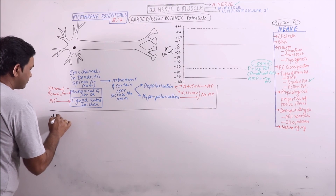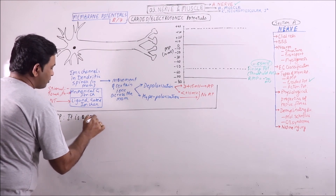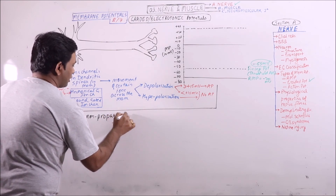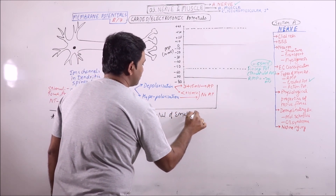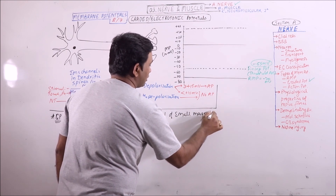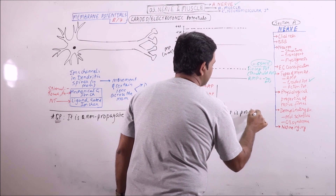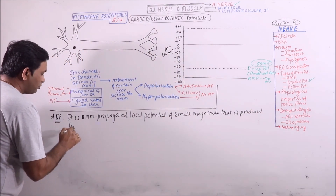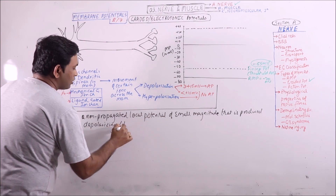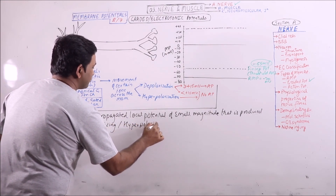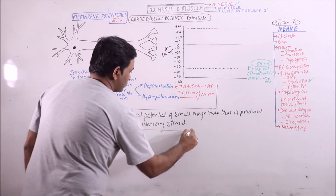How will we define the graded potential? It is a non-propagated local potential of small magnitude that is produced by a depolarizing or hyperpolarizing stimulus. So this is the graded potential.